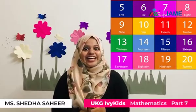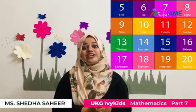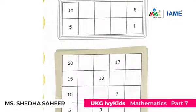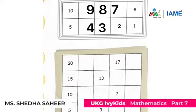Now let's do a worksheet on descending order. This is the worksheet on page number 92 in the course book. You have to complete writing the numbers in the grid in descending order. The first set of descending order has been done for you. You have to complete the second set.